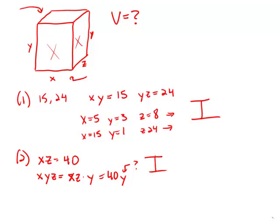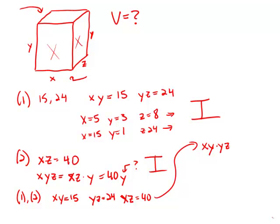Now we combine the statements, and we can use this great trick, because we know that x times y is 15, y times z is 24, and x times z is 40. So let's just multiply all those together. x times y times y times z times x times z equals 15 times 24 times 40.